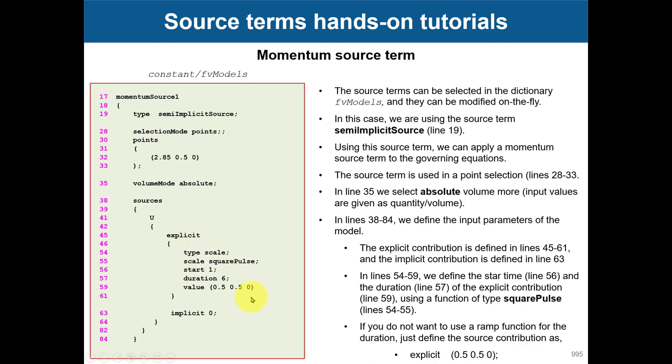See here that we're using this function scale just to add a start and duration. It's a square pulse. There are many functions implemented here and this is the value. If you don't want to use this scaling, you can just go like this: explicit, and it's just starting from zero all the time you have it there.